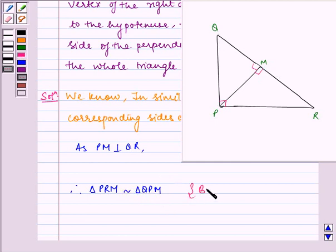By our key idea, which implies PM divided by MR is equal to QM by PM.